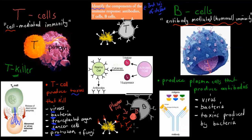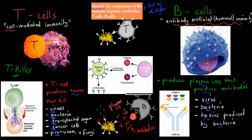These antibodies hook on to the actual pathogen they're designed to kill, thereby deactivating it — meaning it can't do its job anymore and becomes immobilized. So the antibodies are produced by the plasma cells, and the plasma cells themselves are produced by the B cells. The B cells produce plasma cells that produce antibodies. Now these antibodies will target specific types of viruses, bacteria, or toxins produced by bacteria. Because bacteria harm the body by producing toxins, these toxins can also be deactivated by the actual antibodies, which means the bacteria and their toxins will be neutralized.